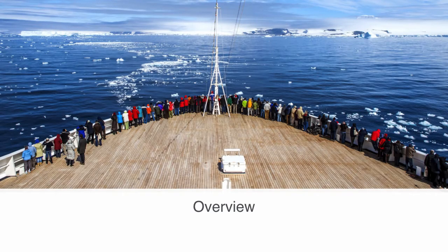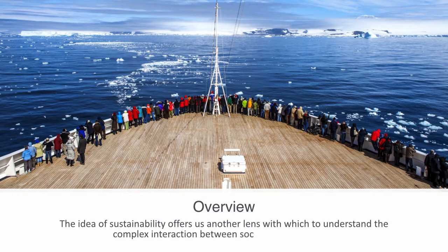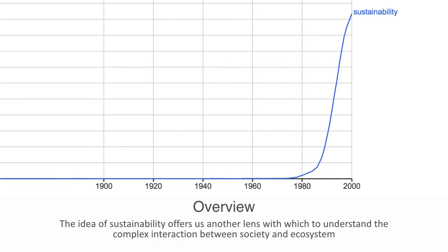In previous modules we've been looking at socio-ecological systems from the perspective of feedback loops and resilience. In this video we'll be taking another perspective on this dynamic between the social and ecological domains as we talk about sustainability. The idea of sustainability offers another lens with which to understand the complex interaction between society and ecosystem. The rise of the term over the past few decades has been phenomenal, rapidly going from the fringes to the center of our collective conscience. A graph showing the number of times the word occurs in book publications shows a stellar takeoff around the late 80s, with sustainability articles doubling every eight years since the early 1990s.